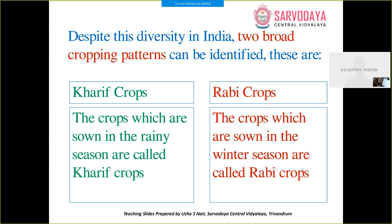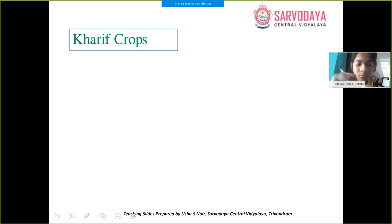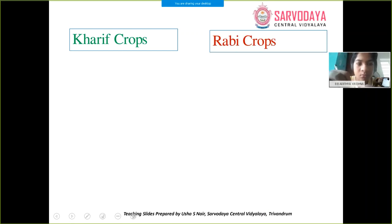You have to know this because questions often come from here — teachers may ask you the differences between Kharif crops and Rabi crops. Kharif crops are sown in the rainy season and Rabi crops are sown in the winter season. Please note this down — it is important.